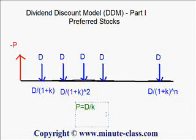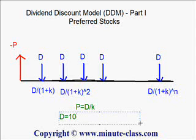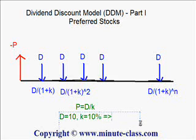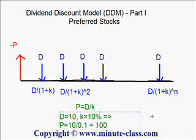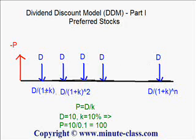For example, if D equals 10, which means the stock will pay $10 every year as dividends, and K is equal to 10%, then the price of the preferred stock will be equal to 10 divided by 0.1, which is equal to $100. Please pay attention that for K, you have to substitute it as a decimal number. Although this looks simple, this is the basic concept of the dividend discount model. In other variations of the stock, it uses the same concept — the only difference is that the dividends may not be constant.